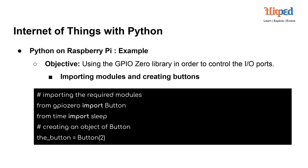Creating a button object: a button object is created and linked to a specific GPIO pin. In this example, the button is connected to GPIO pin 2. The Button class is part of the GPIOzero library and provides a convenient way to interact with buttons or switches connected to GPIO pins. The argument 2 passed to Button specifies the GPIO pin number. Once initialized, we can use the button object to check if the button is pressed, wait for it to be pressed or released, and so on.